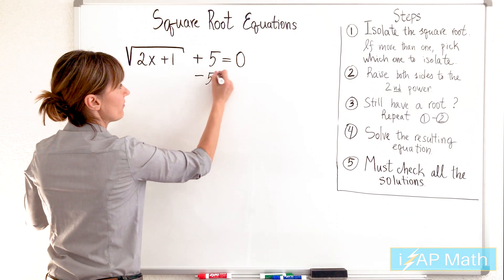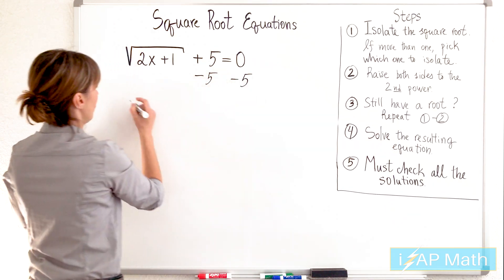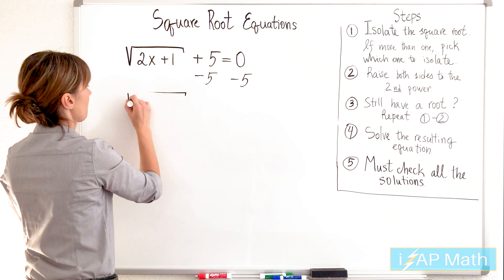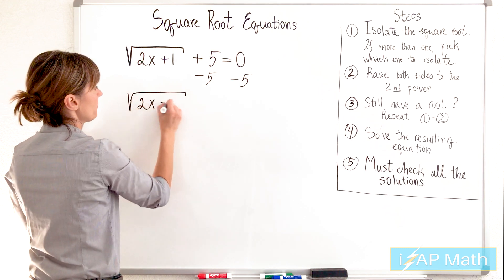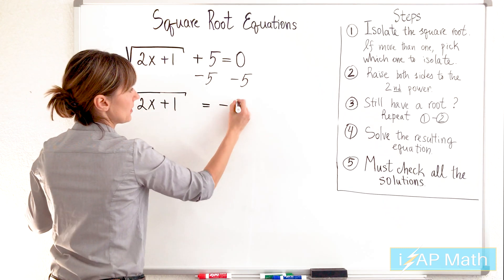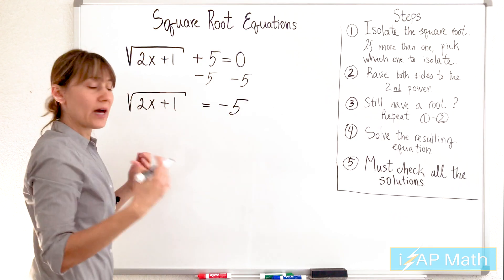Here we go. Subtracting 5 from both sides, we have square root 2x plus 1 equals negative 5. Now let's make an observation.